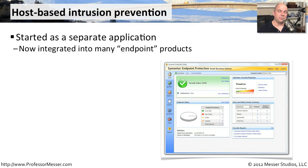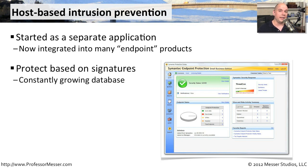Another popular way of preventing exploits is having intrusion prevention right on the host. Host-based intrusion prevention is software running on your workstation that examines all traffic coming into the device. It's usually a separate application, though these days it's increasingly integrated with antivirus and other utilities already running on your servers. Blocking is typically based on signatures, with the database constantly updated — the process is very similar to network-based intrusion prevention.